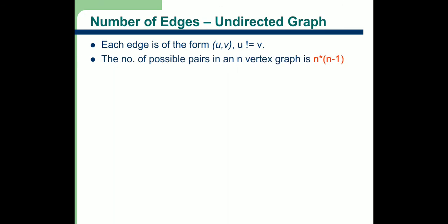Next, the number of possible pairs in an n-vertex graph is n into n-1. In any graph with n vertices, the number of possible pairs (u, v), that is possible edges, is n into n-1.